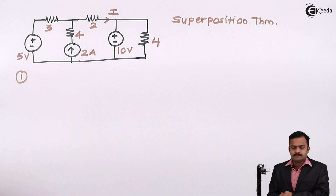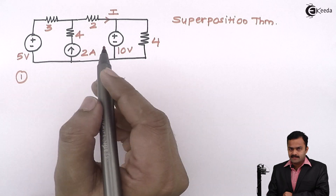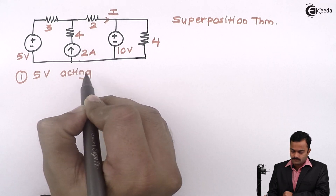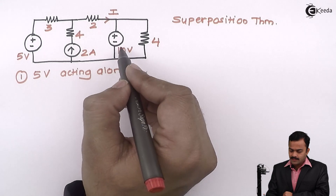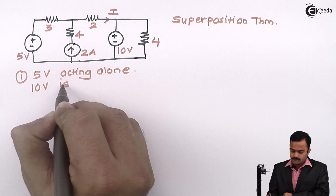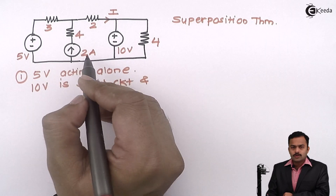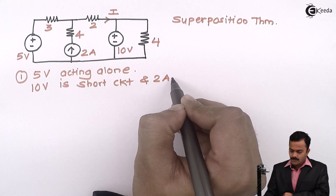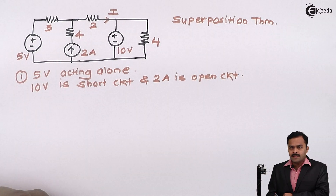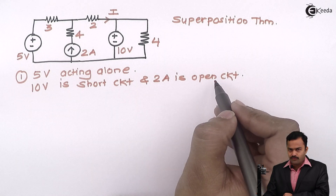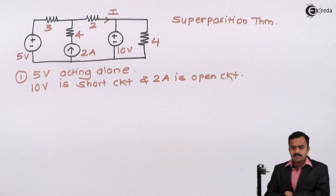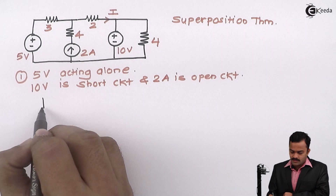Step number one: we have to consider one source at a time. I will consider 5 volt acting alone. The remaining sources are 10 volt and 2 ampere. Since 10 volt is a voltage source, it needs to be short circuited. And 2 ampere is a current source, so we will open circuit it, because the internal resistance of a current source is infinite and of a voltage source is zero. So the modification is done in the circuit.